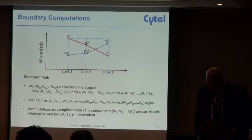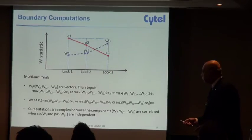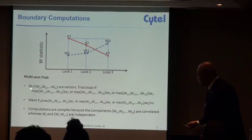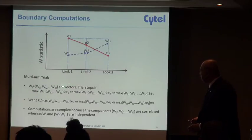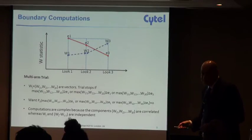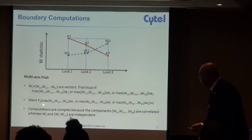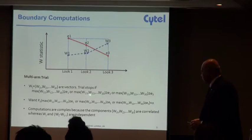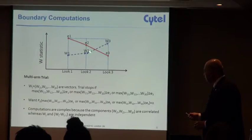The independent increments allow you to get these boundaries very quickly and very efficiently. Now in the multi-arm situation, what you are dealing with is that these W's are vectors. Each W consists of a d-dimensional vector. You're going to do essentially the same thing but you're going to be looking at the maximum of these W's at each look. You want the probability that the max at the first stage crosses E1 or it remains in the continuation region and the max of the W's at the second stage crosses the E2.